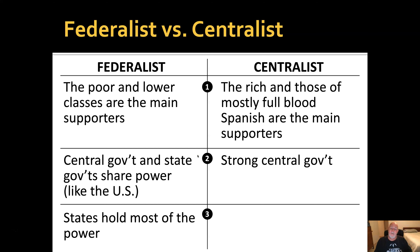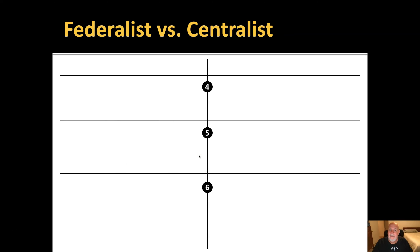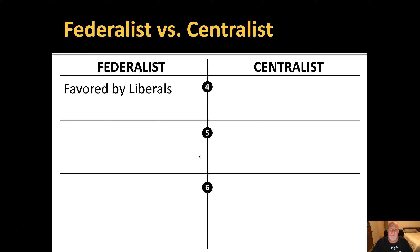In a Federalist form of government, the states hold most of the power and make the laws that affect people day-to-day. In a Centralist government, the states have very little power and most of it resides in the national government. The Federalist form of government was favored by liberals — those who wanted to see change — while the Centralist form of government was favored by conservatives who did not want to see change.